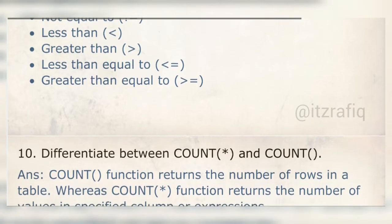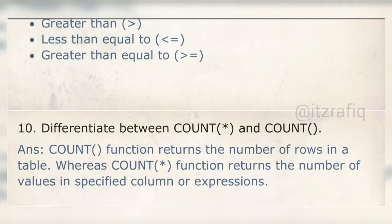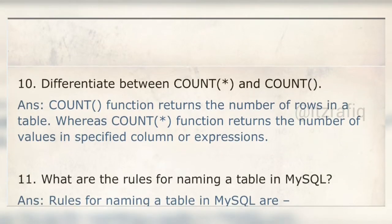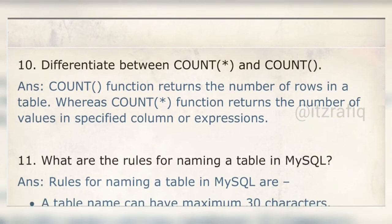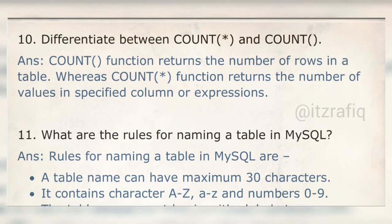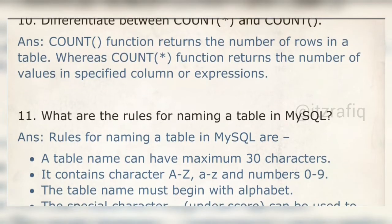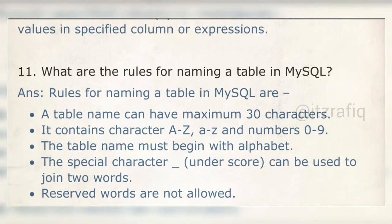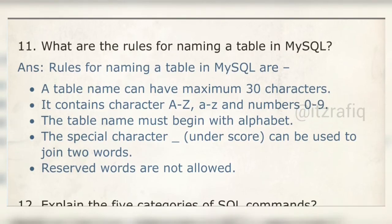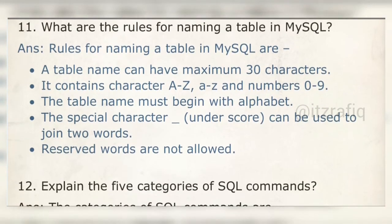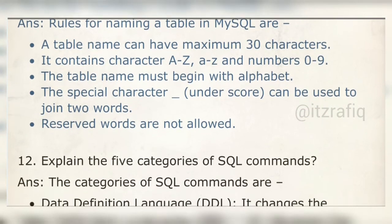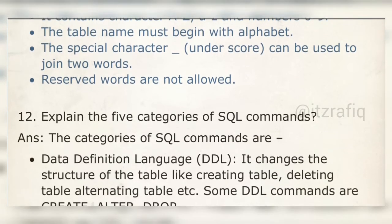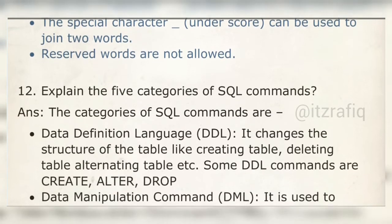The difference between COUNT(*) and COUNT(column): COUNT(*) counts the total number of rows in a table, including all records. COUNT(column) counts values in a particular column. For table naming rules: maximum 30 characters, can contain A-Z, a-z, or 0-9, must begin with an alphabet, can use underscore to join words, and reserved words are not allowed.